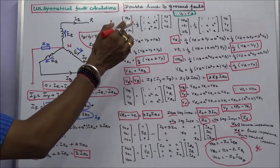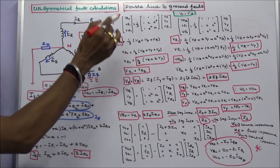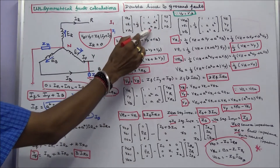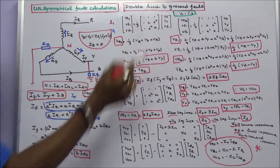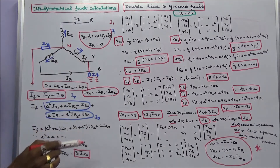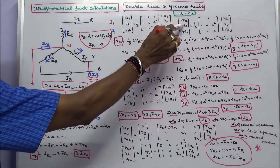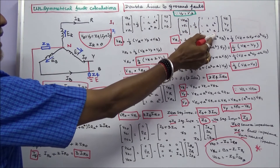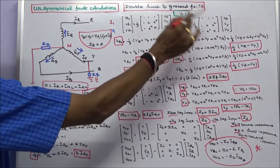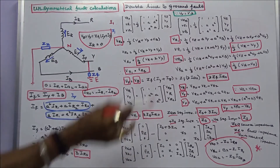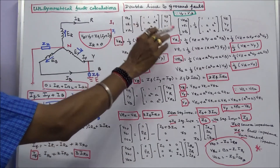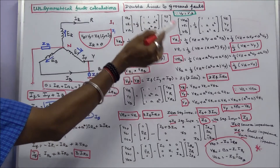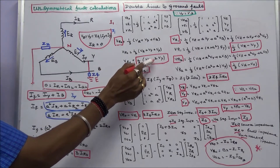The zero, positive, and negative sequence voltages can be expressed in matrix form as 1/3 times [1 1 1; 1 A A²; 1 A² A] into [VR VY VB]. Since VB equals VY, VR0 equals 1/3 into (VR plus 2VY).